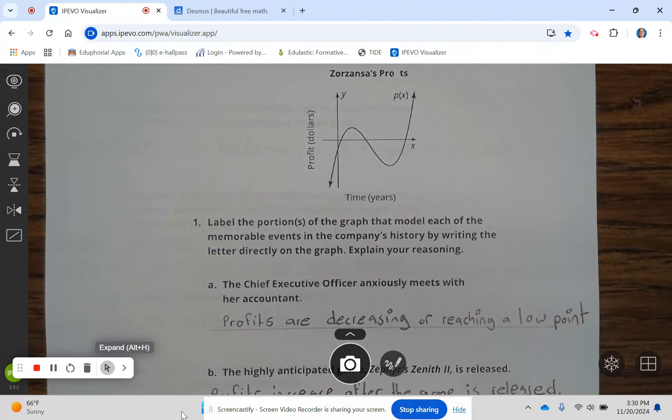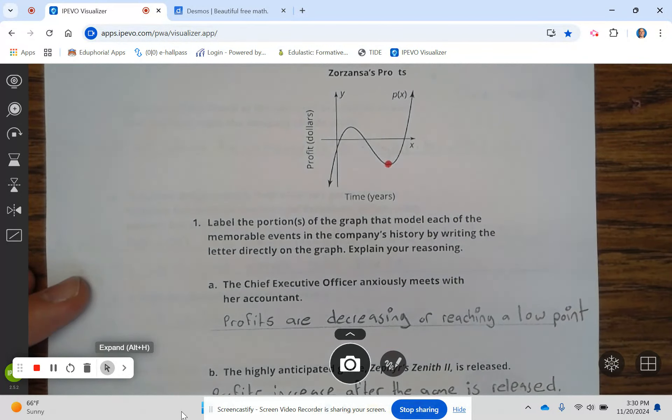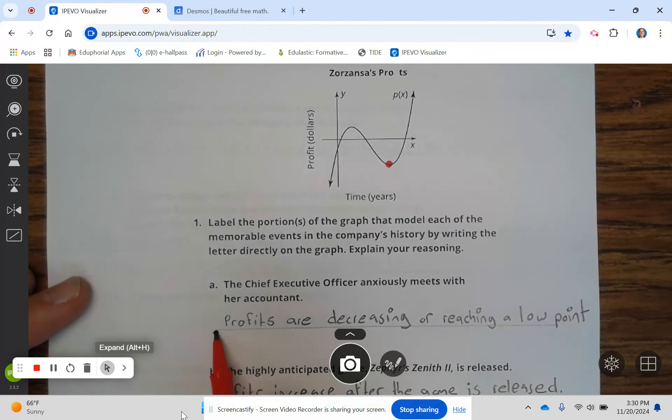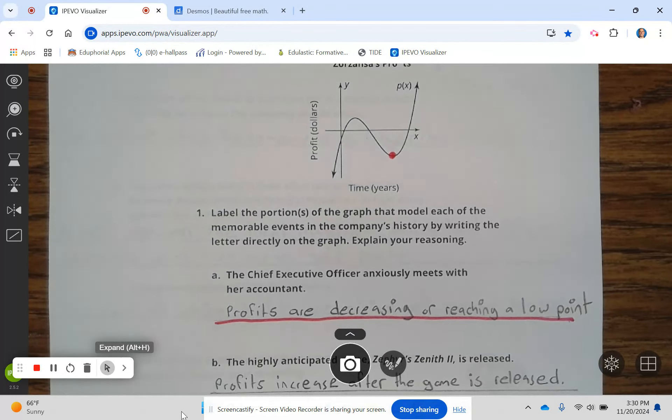Label the portion of the graph that models each of the memorable events in the company's history by writing the letter directly on the graph. Explain your reasoning. The chief executive officer anxiously meets her accountants. Profits are decreasing or reaching a low point, which is that point right here. Go ahead and finish up 1A.